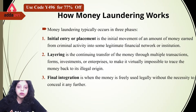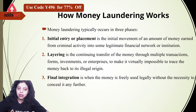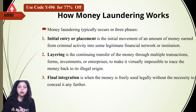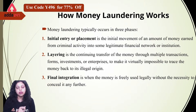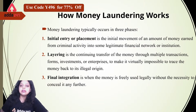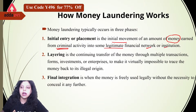What are the stages of money laundering or how does money laundering work? There are three stages of money laundering: placement, layering, and integration. When we are talking about money laundering and how to convert black money into white money, the initial entry is known as the placement stage. This is the first stage — it is the initial movement of money earned from criminal activity into some legitimate financial network or institutions.